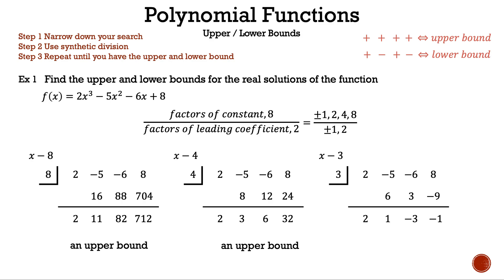So let's pick 3. 3 is not a result of any of the factors of the constant divided by the factors of the leading coefficient, but now we have narrowed down our search enough to pick the next smallest whole number, which is 3. Our result is not an upper bound because not all the numbers on bottom are positive, since we have 2, 1, -3, -1. What does this mean? This tells us that 4 is not only an upper bound, but is the least upper bound.